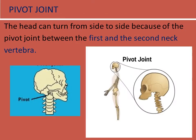Pivot joint: the head can turn from side to side because of the pivot joint between the first and the second neck vertebra.